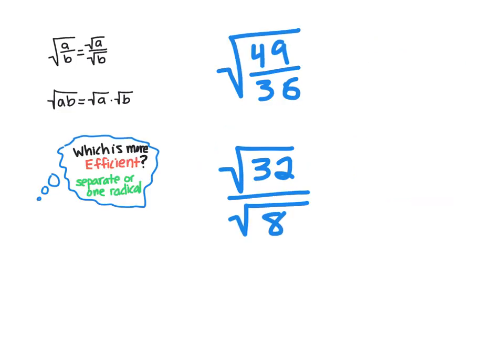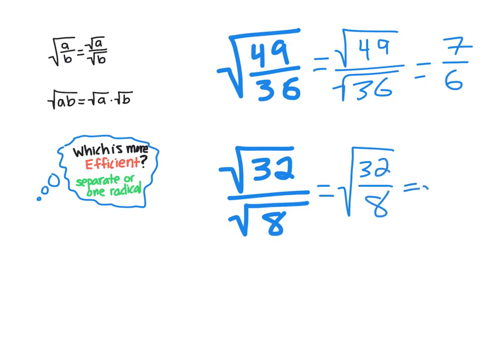Let's look at two particular examples of quotients. The first one is the square root of 49/36. Since I know that 49 and 36 are both perfect squares, it makes more sense to write this as two separate radicands, the square root of 49 over the square root of 36. This is just 7/6. Now in this next case, I have the square root of 32 over the square root of 8. Neither of these are perfect squares, so would it be more efficient to put these together as one radicand? In this case, it would, because 32 over 8 is 4, and I know the square root of 4 is 2.